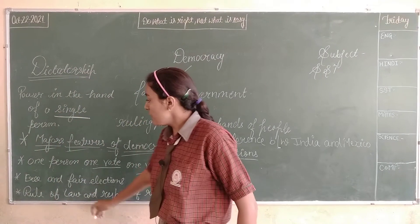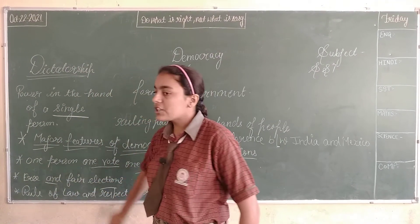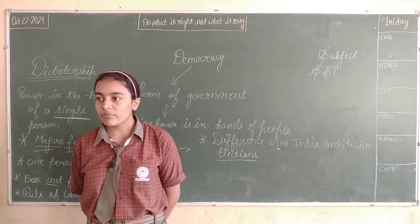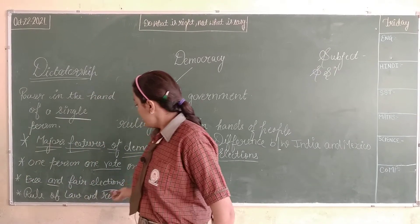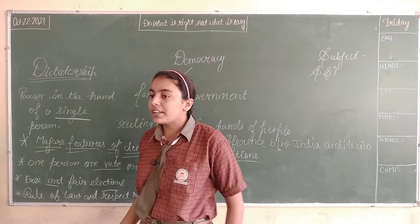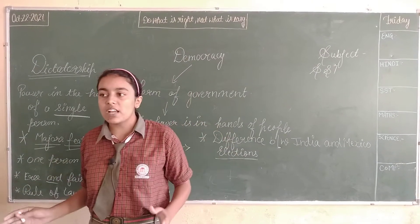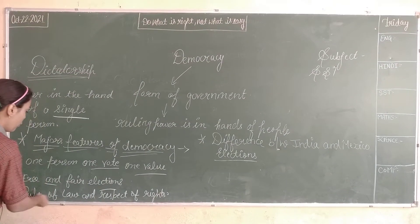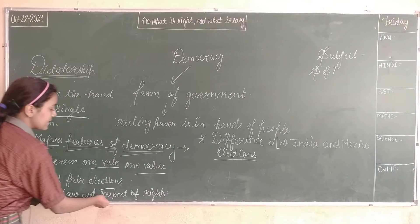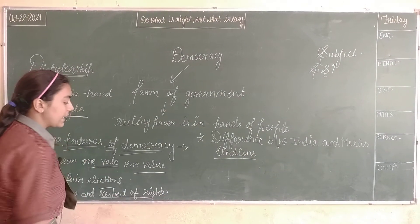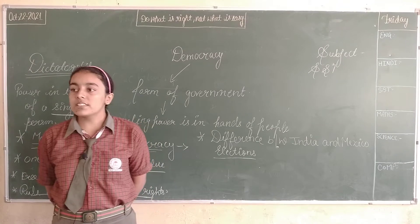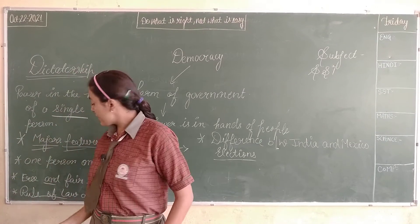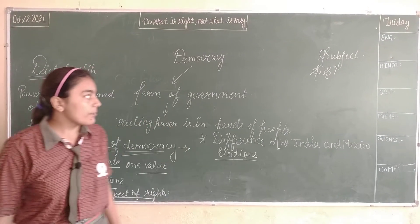The second feature is free and fair elections, in which all parties have a fair chance. The third one is rule of law and respect for rights, in which all people have to follow the rules and respect each other's rights.